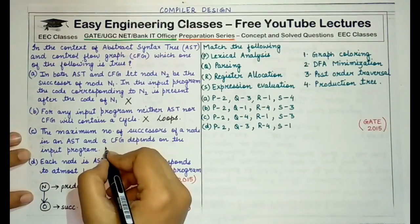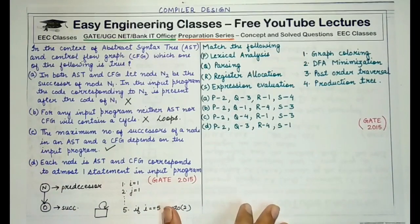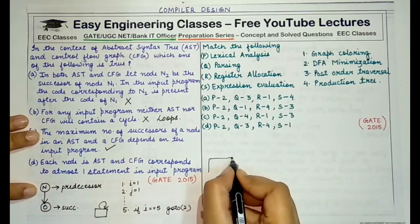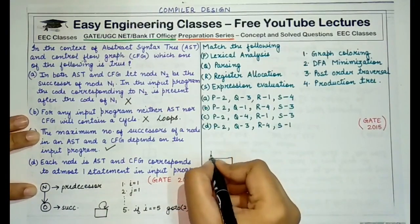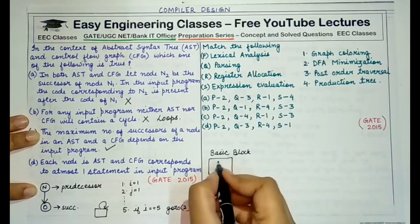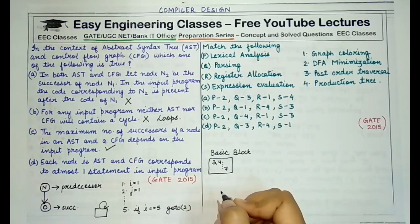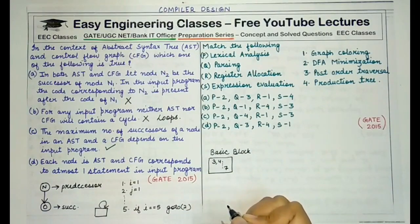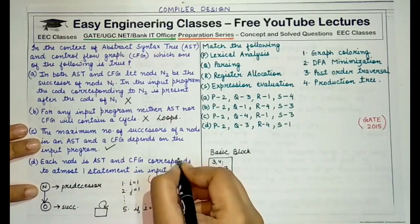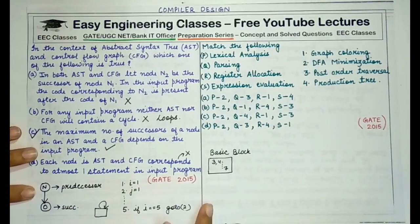The last option states that each node in AST and CFG corresponds to at most one statement in the input program. This is not correct at all — a single basic block can be a collection of multiple statements that are sequentially executed. Statements can be grouped together as a single block or node. So the correct answer is option C.